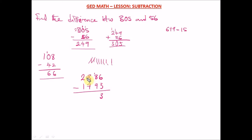Now can we take 7 from 2? No. We borrow a 1 — making it 12 — and 12 minus 7 = 5. We're left with 1 in the thousands column. 1 minus 1 = 0, so we don't write that leading zero. Our answer for 2386 minus 1793 is 593.